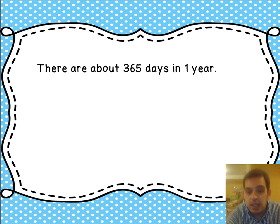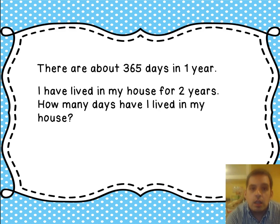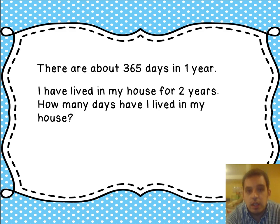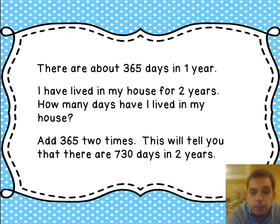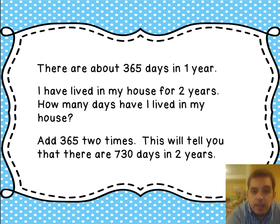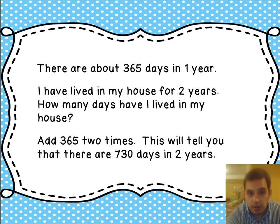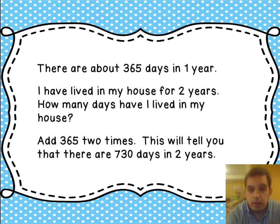There are 365 days in 1 year. I have lived in my house for 2 years. How many days have I lived in my house? We're going to take 365 days in a year and add it together 2 times: 365 plus 365, or 365 times 2. That tells you there are 730 days in 2 years. So the answer is I've been in my house for 730 days.